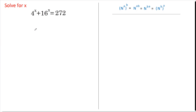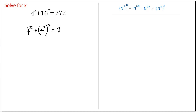Hi, welcome back. Let's have a go at this one: 4 to the power of x plus 4 to the power of 2, all to the power of x, equals 272.